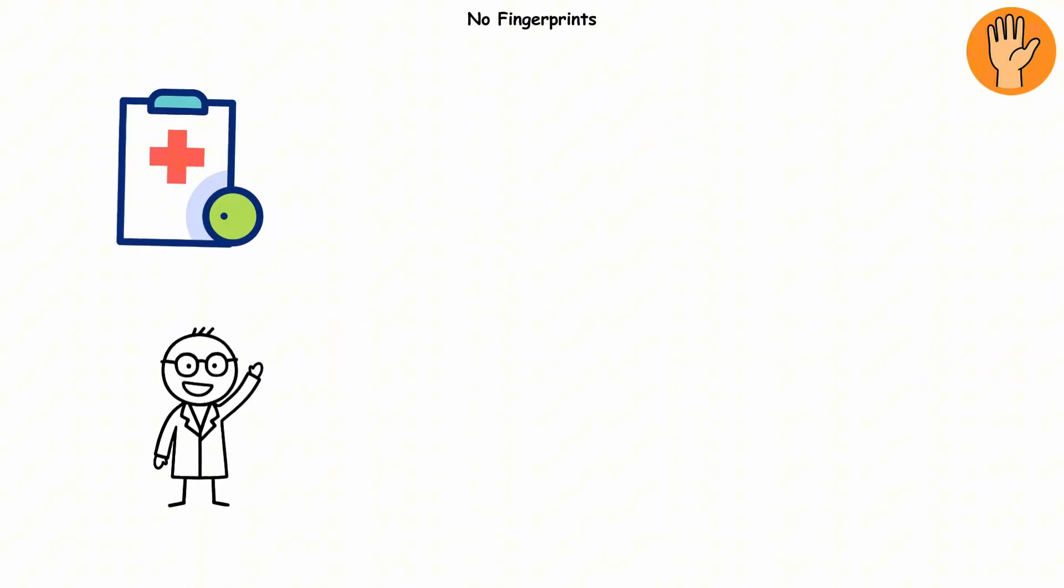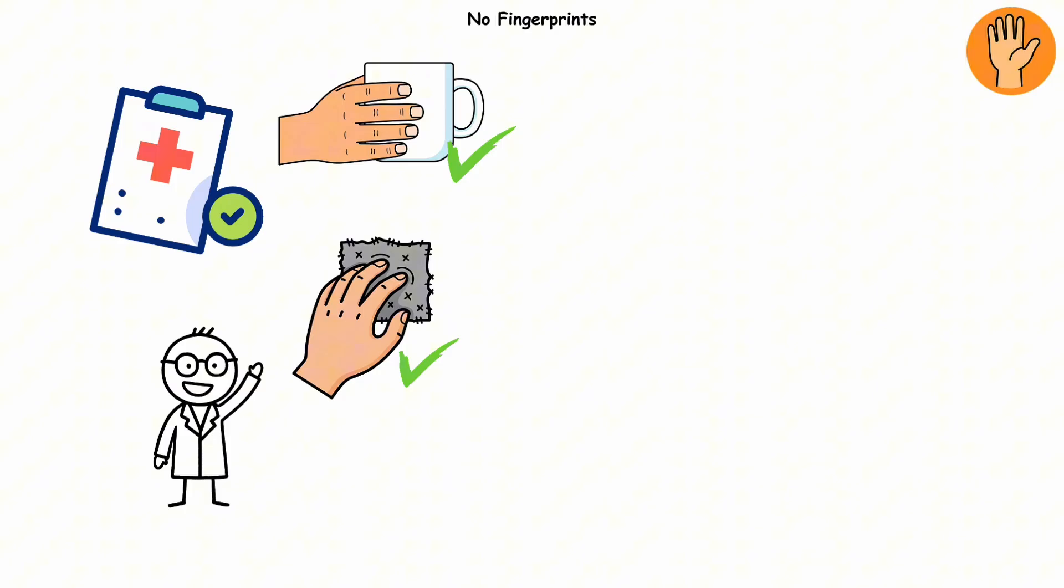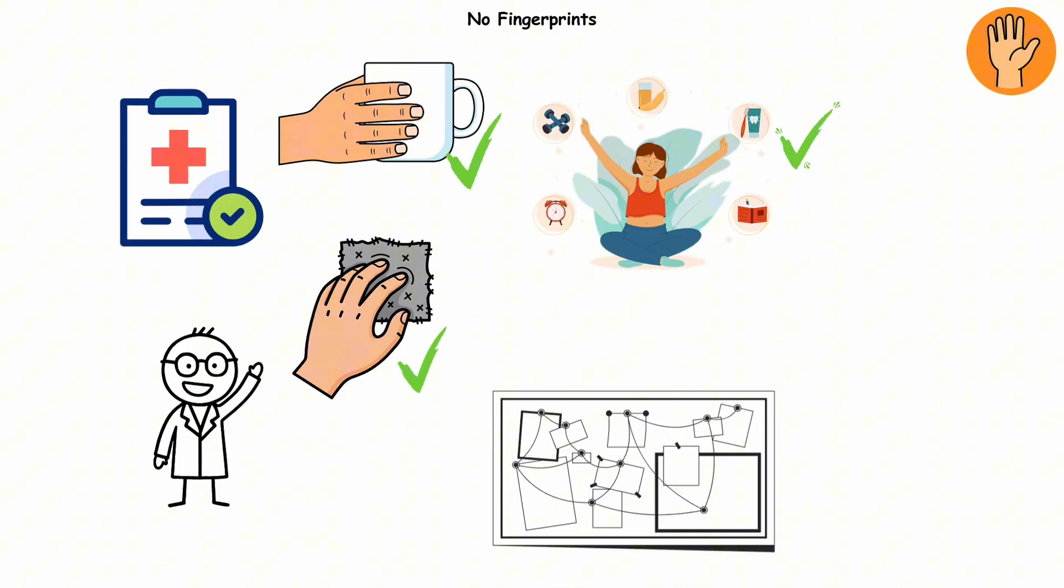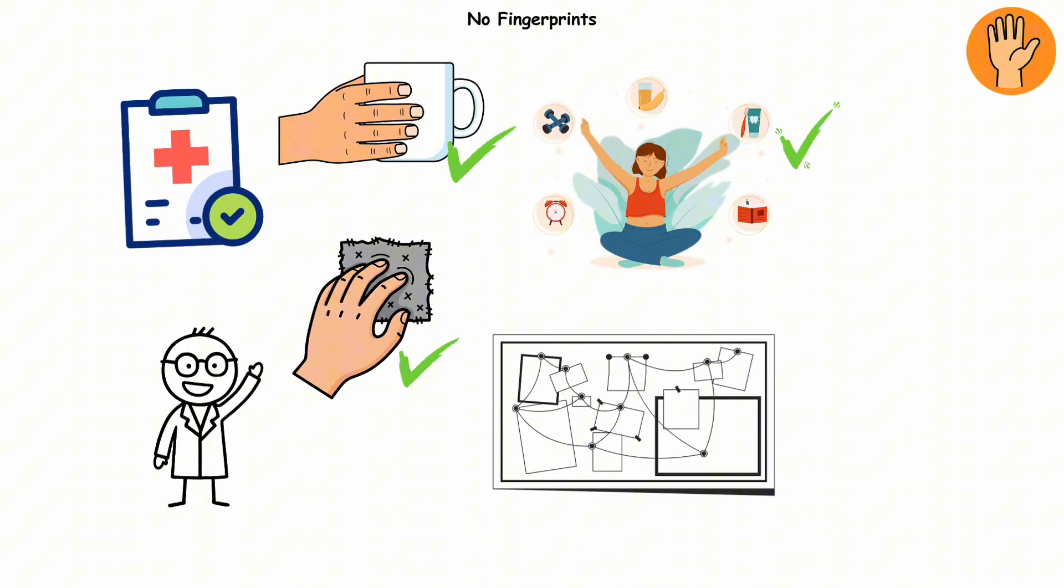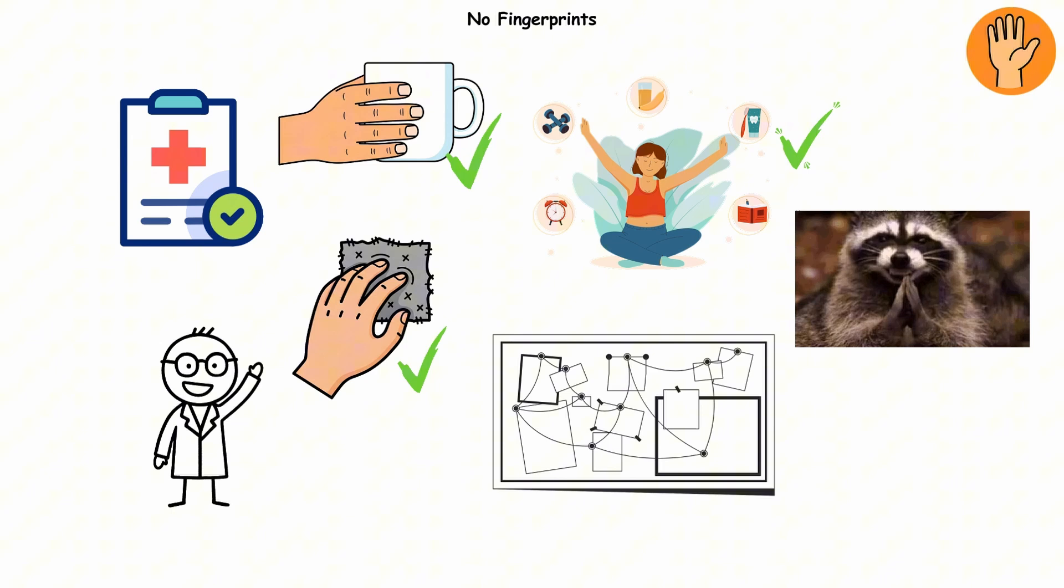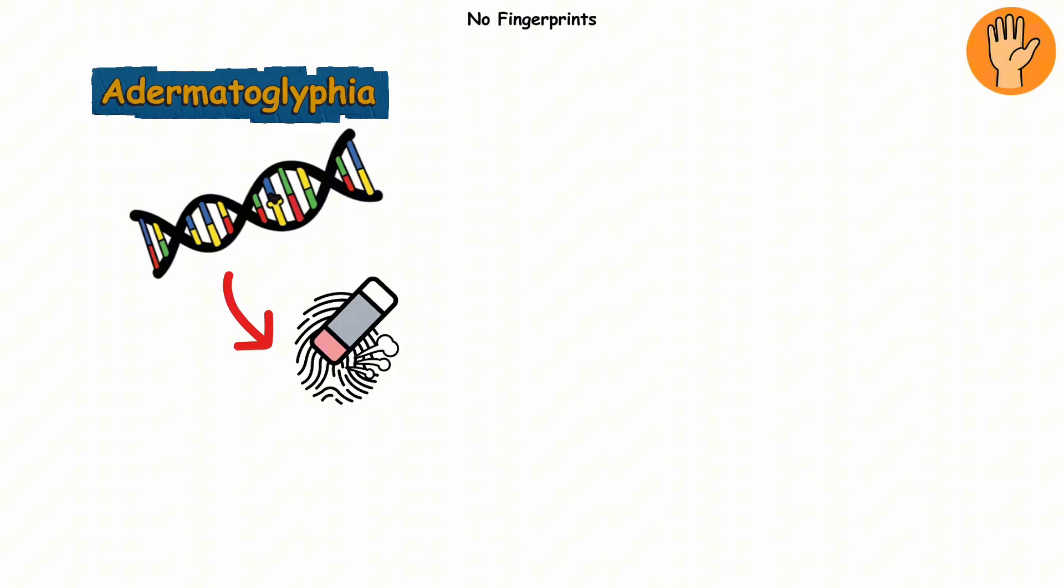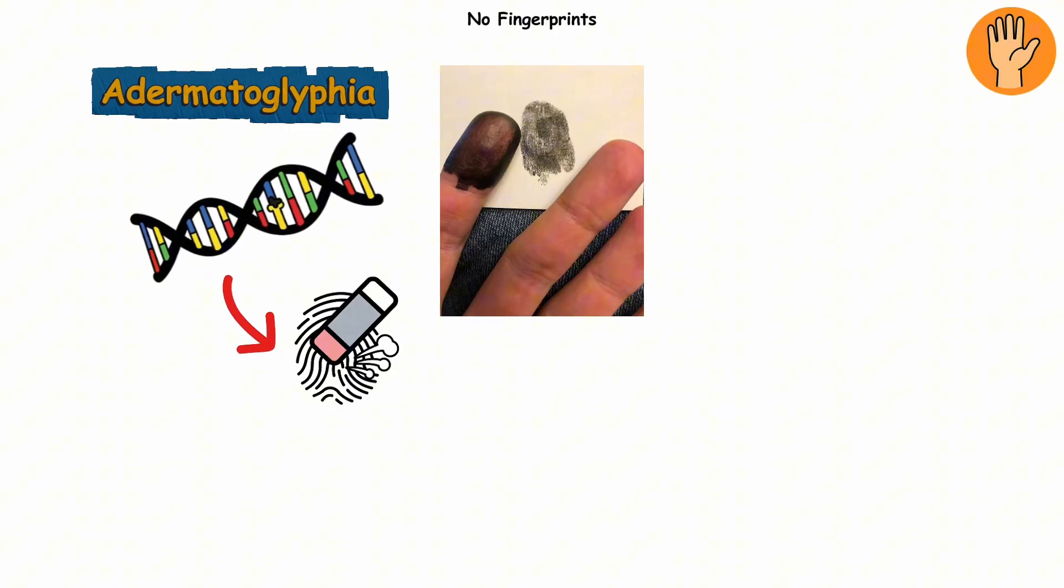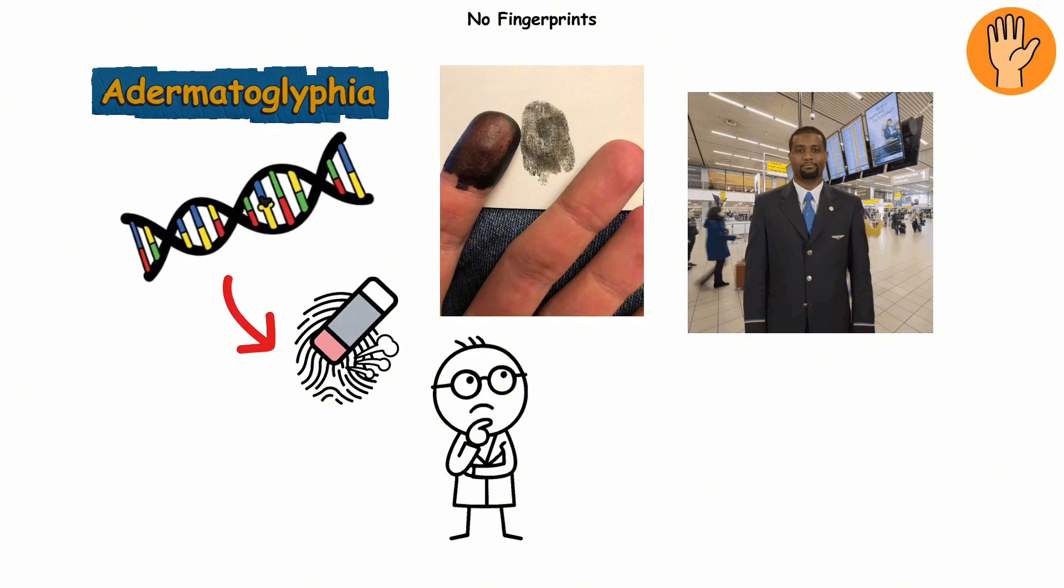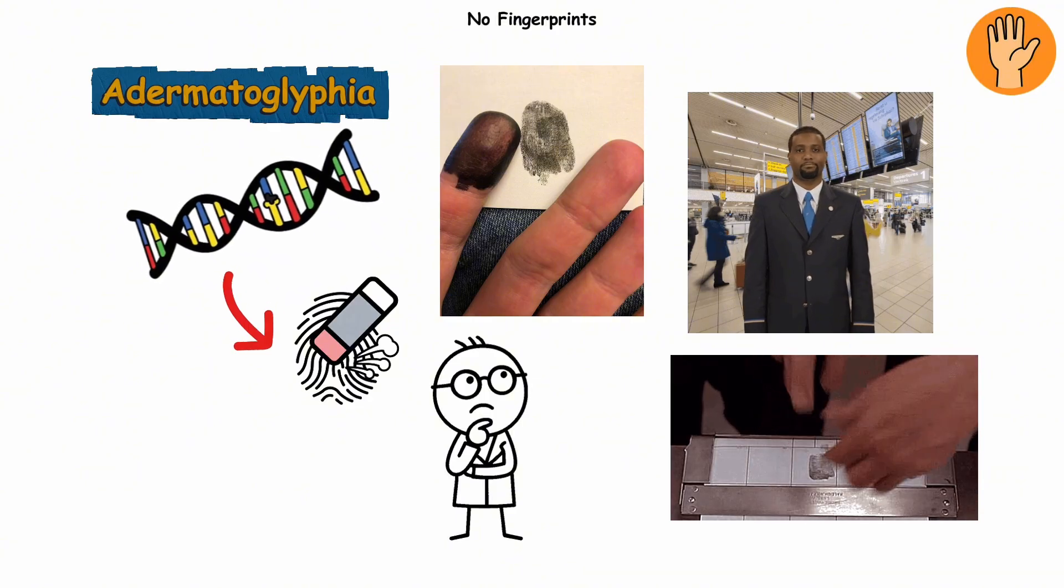What's wild is that it doesn't really cause any health issues. You can still grip things, feel textures, and live totally normal. You just happen to leave zero evidence behind, making you the perfect criminal mastermind. Adermatoglyphia is proof that even the tiniest change in DNA can erase one of the most human identifiers, literally wiping away the you from your fingertips. Would you rather get stuck in airport security every trip, or leave your greasy fingerprints on everything?